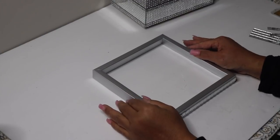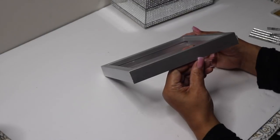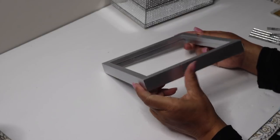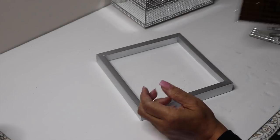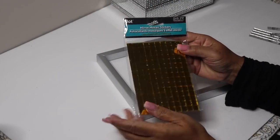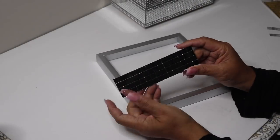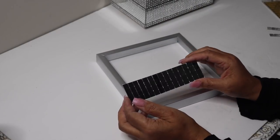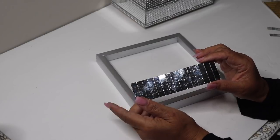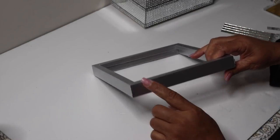I started decorating the single frame, which will be my lid, with some mirror tiles. I'm using regular mirror tiles like these gold ones from Dollar Tree. I put a single row of tiles around the entire frame.